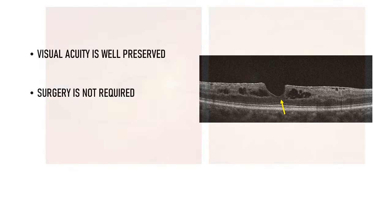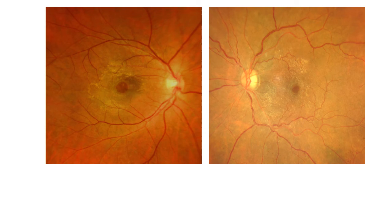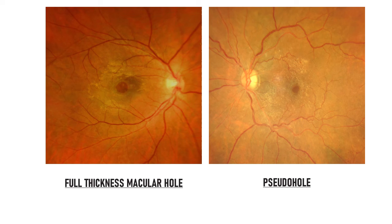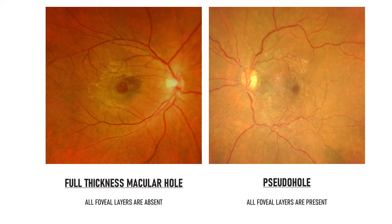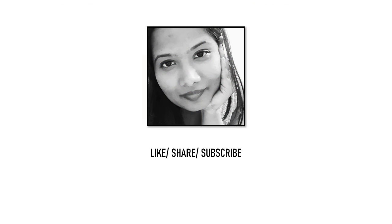So in conclusion, the differential diagnosis of a full thickness macular hole could be a pseudo hole. Both might appear very similar on slit lamp biomicroscopy but can be easily differentiated on OCT. In full thickness macular hole, all the foveal layers are absent, while in a pseudo hole, all the foveal layers are present. Please like and share this video with your friends and colleagues if you found it useful, and do subscribe to my channel to support free education. Thank you very much.